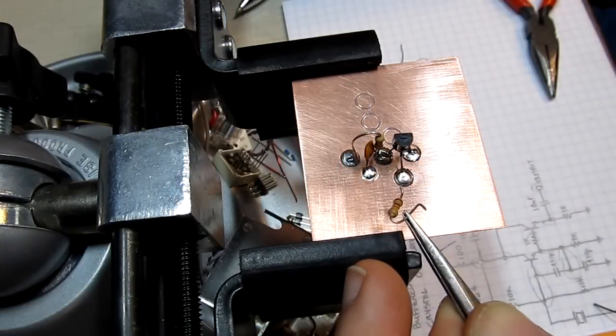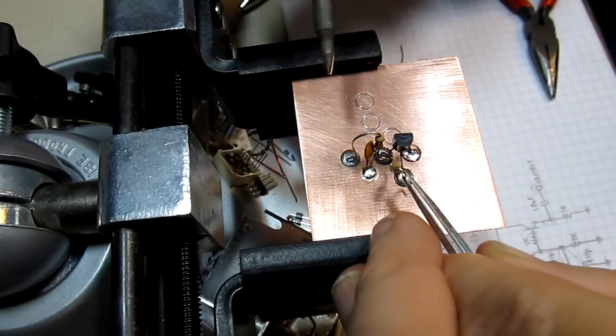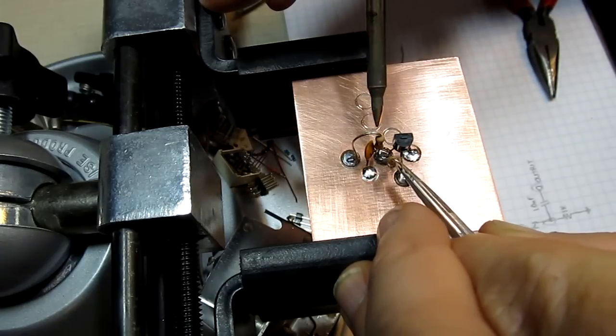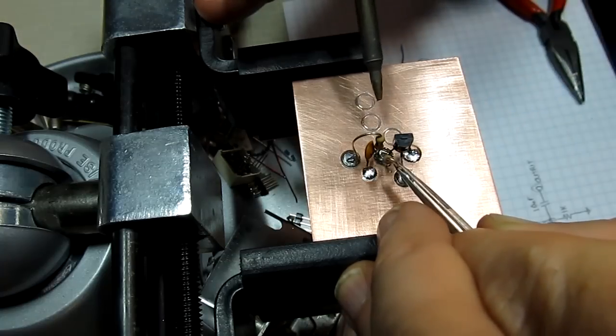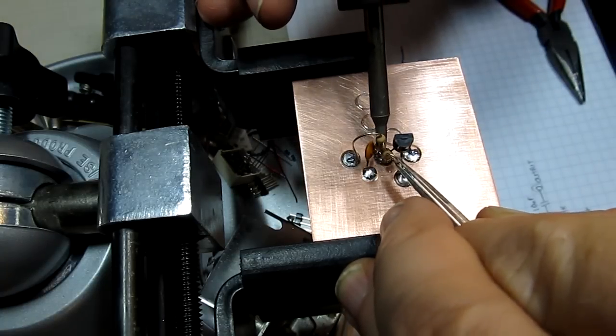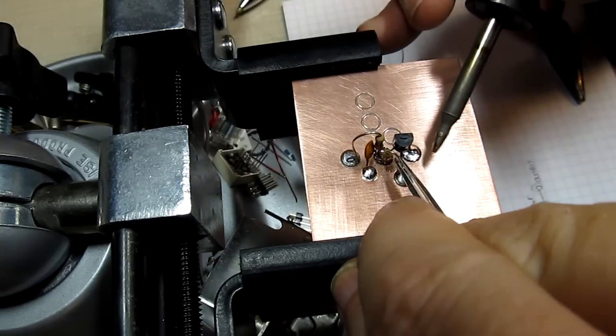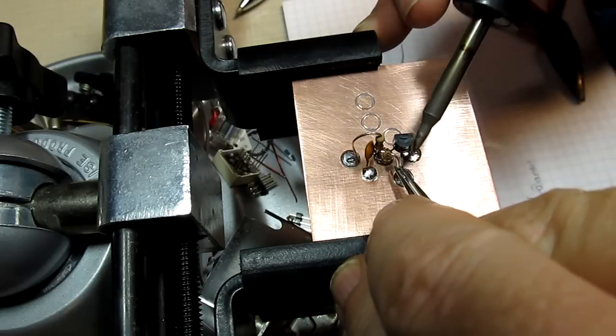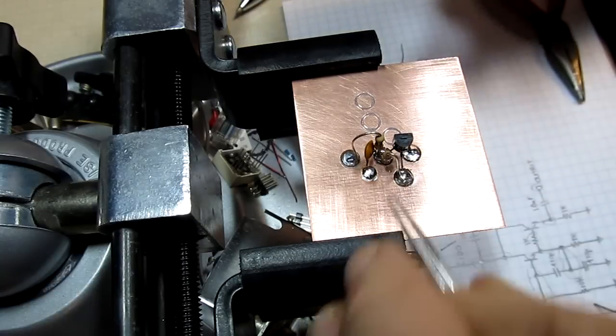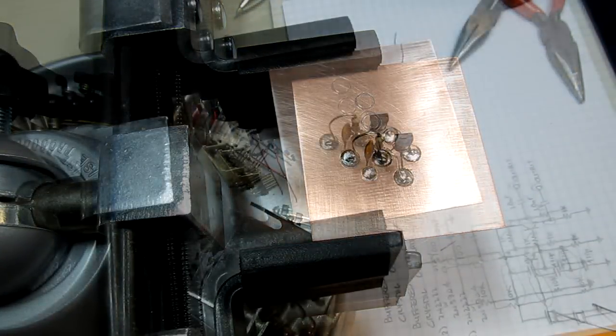Adjust the leads for that 10k resistor. So let's lay him in here and solder that in place. There's one end and we'll stick the other end right over here. There we go. That 10k resistor is now in place.